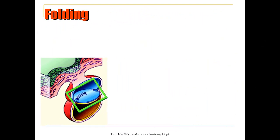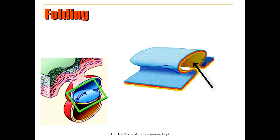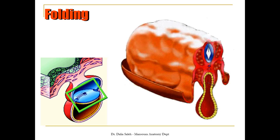During the fourth week of development, because of the growth of the embryo in two directions, the trilaminar germ layers will fold upon themselves and part of the endoderm will be trapped inside the cylindrical embryo. The somites that grow on each side of the notochord cause the embryo to fold upon itself in a lateral direction, becoming cylindrical in shape, so part of the yolk sac will be trapped inside the body cavity.